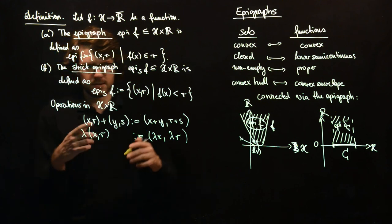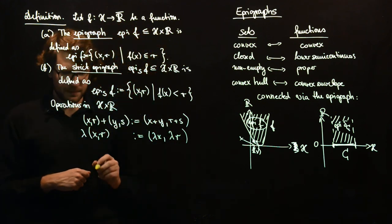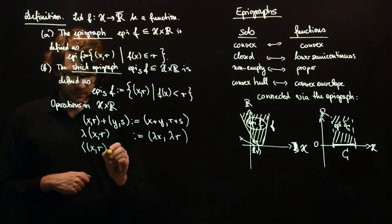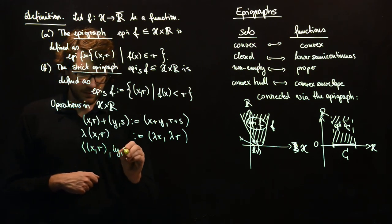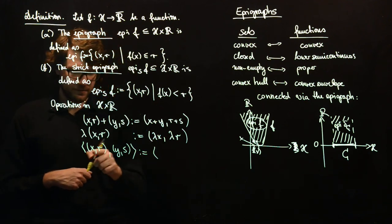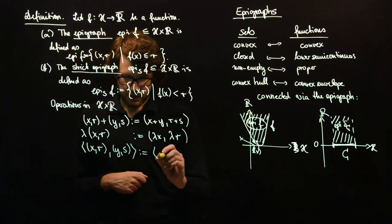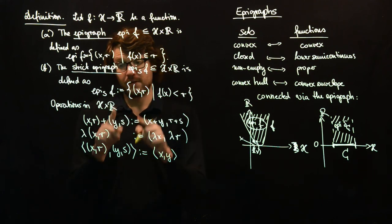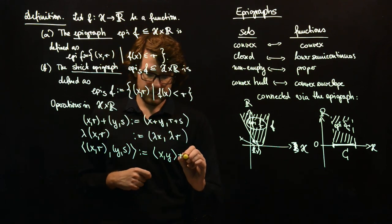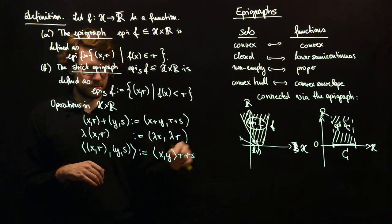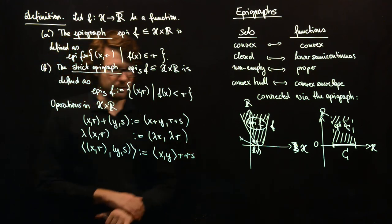So the question is which inner product we take here. So the inner product between two pairs is just the sum of those two inner products here. And so we take the inner product of x and y and the inner product of r and s. r and s are elements of R. This will be just the product, the usual product of r and s.